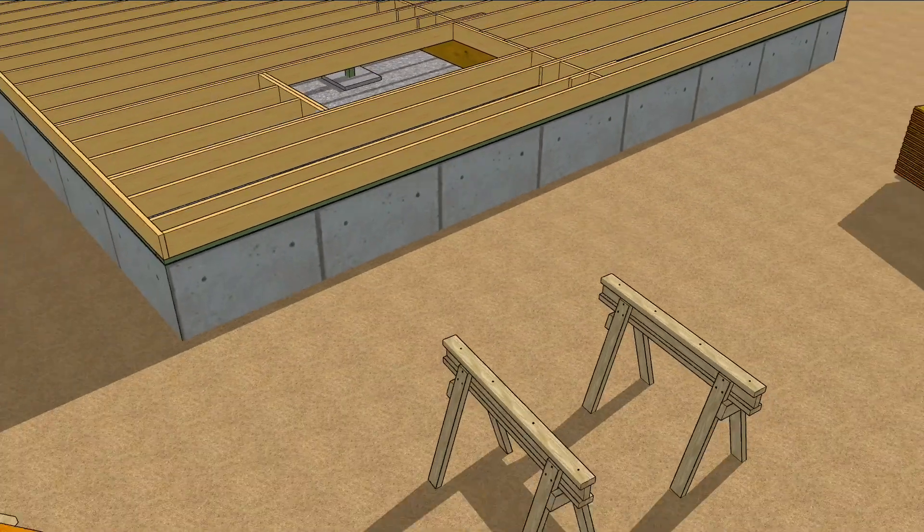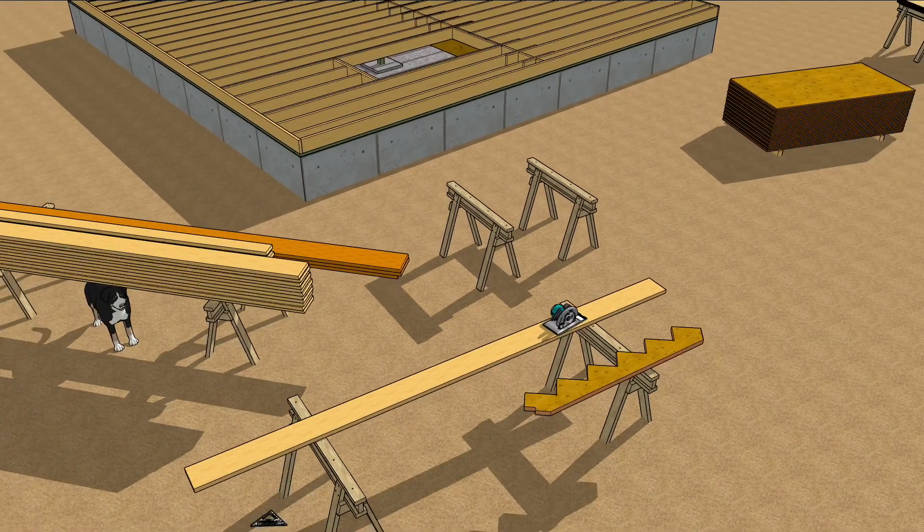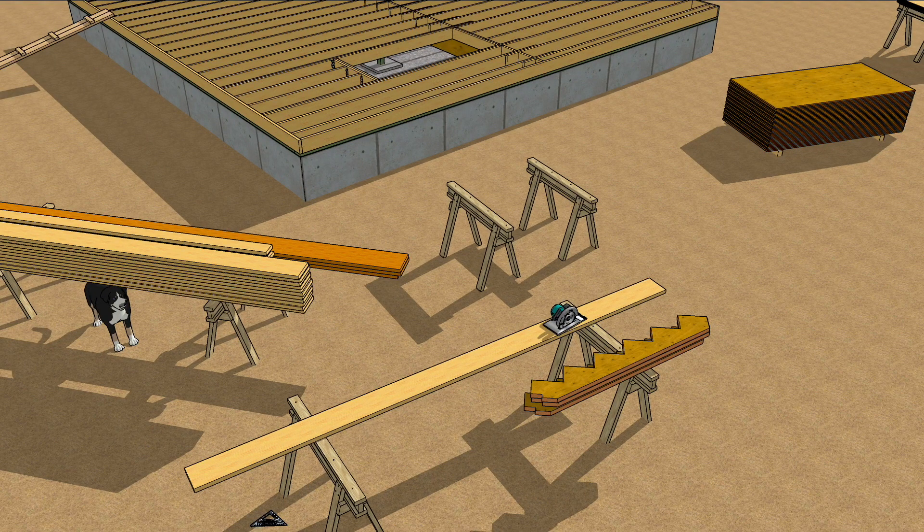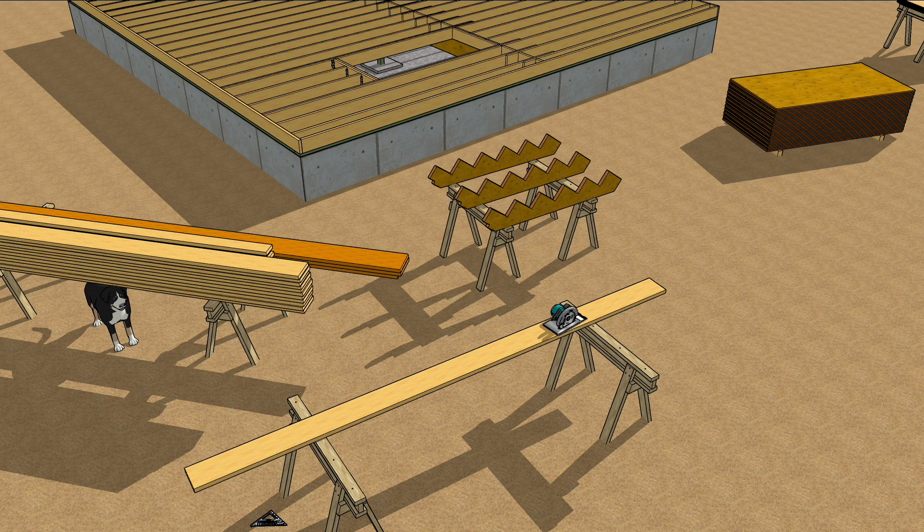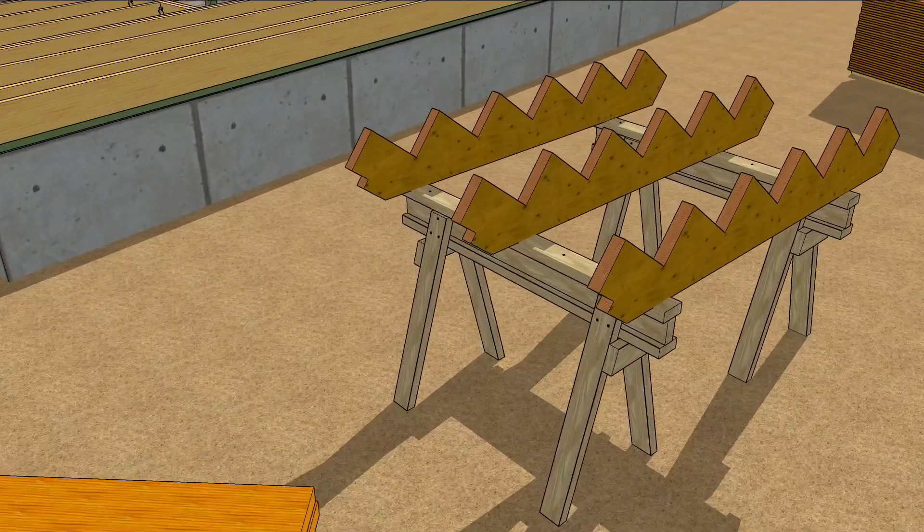When you're confident that it fits, go ahead and use that first one as a pattern for the others and cut them out. Assemble them on a set of sawhorses, fastening the bottom cleat to secure them to the floor.